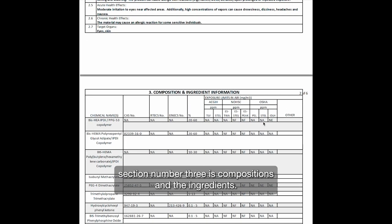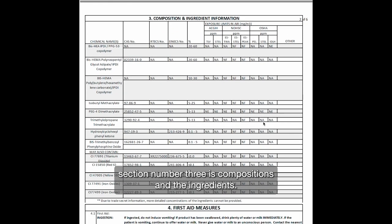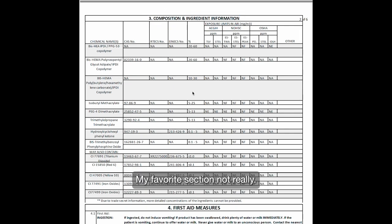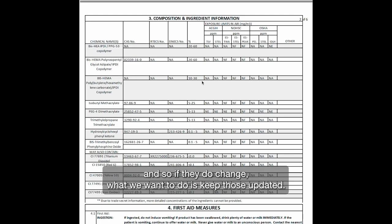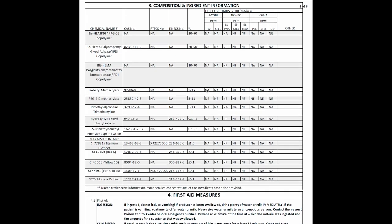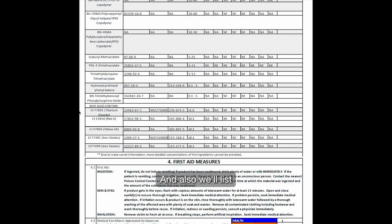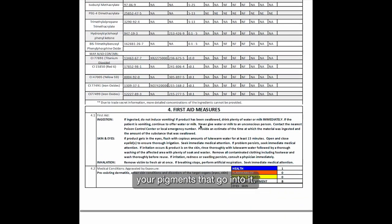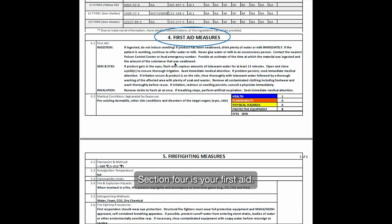Section three is compositions and ingredients — my favorite section, not really. The names seem to change fairly often, so when they do change we want to keep those updated. It will also list your pigments that go into it. Section four is first aid — what do you do if you ingest it, get it in your eyes, on your skin, or if you inhale the product.